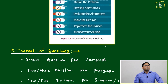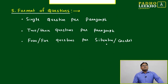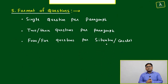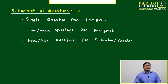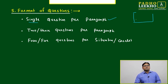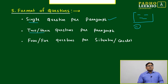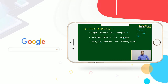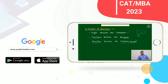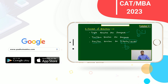Now, which types of questions are generally asked in JAT or other MBA entrance tests related to decision making? One type is single questions per paragraph — one paragraph is given with one question. Another type is case-based: two or three questions per paragraph, or four or five questions based on a particular situation or case. That situation may constitute two or three paragraphs of content.